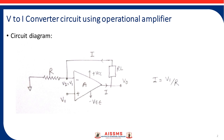The circuit diagram for V2I converter using operational amplifier is shown in the figure. The circuit consists of the input signal V1 that is given to the non-inverting terminal of the op amp. It also consists of load resistor R_L that is connected between the inverting terminal and output terminal of the op amp IC. As neither end of the load resistor is connected to ground, the load is called a floating load. Also, the circuit consists of one more resistor R that is connected between the inverting input terminal of the op amp and ground.